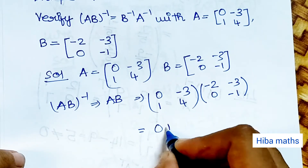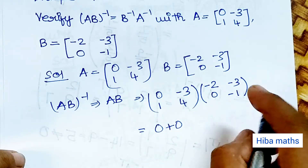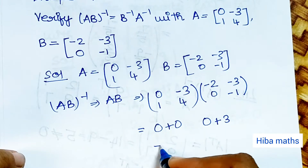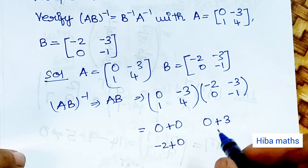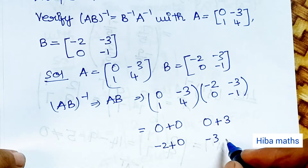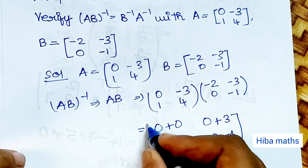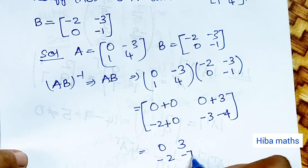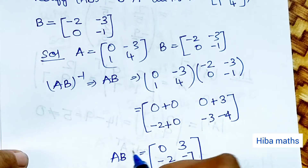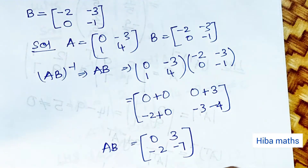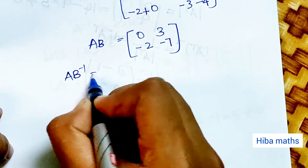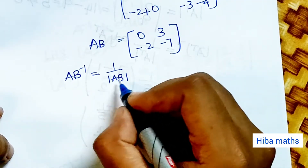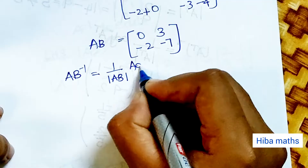The AB matrix result gives us entries: −2, −3, 4, 0, −3, 1, 0. We write the inverse formula as AB inverse equals 1 by modulus of AB into adjoint of AB.